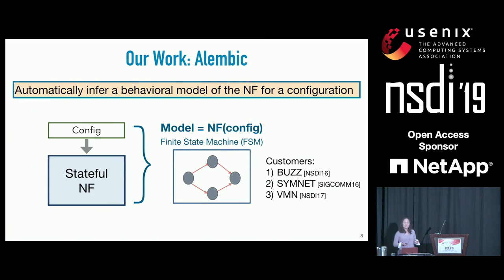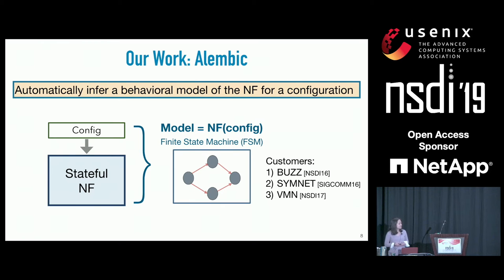Having shown the limitations of handwritten models, the goal of our project is to automatically infer the behavior model for stateful network functions given a configuration. Specifically, given an NF with a config, we want to output a model that describes the input and output behavior of the NF. We use a finite state machine (FSM) to denote the model—as shown by prior work, it's a natural abstraction to capture stateful behavior. The resulting model can be used by downstream network testing and verification tools.